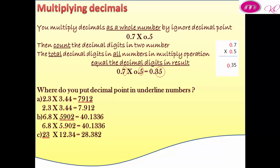For number C, the result has three decimal digits and one number has two decimal digits. That means the first number must have one decimal digit, and the answer is 2.3.